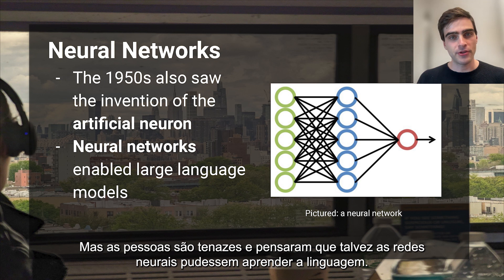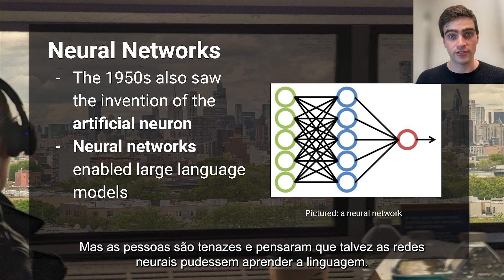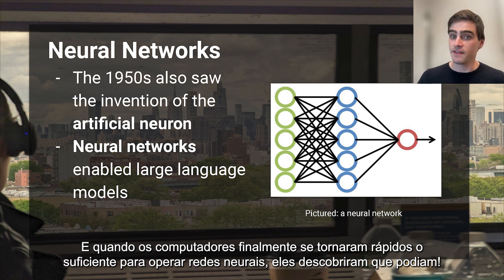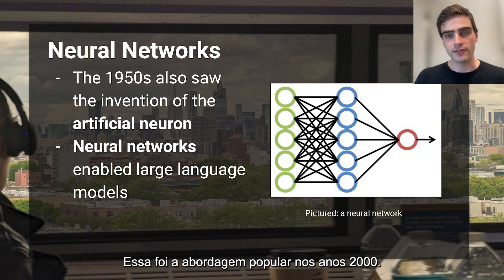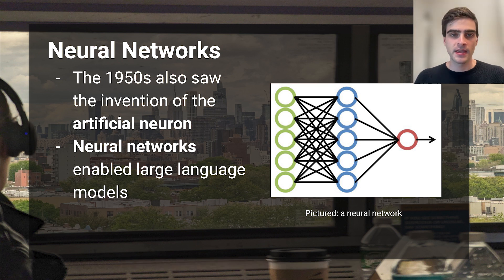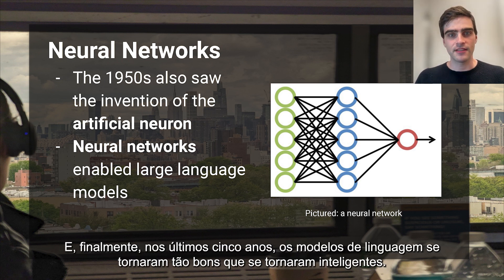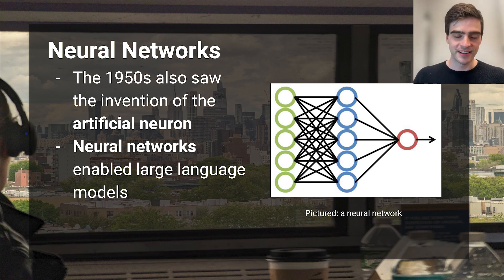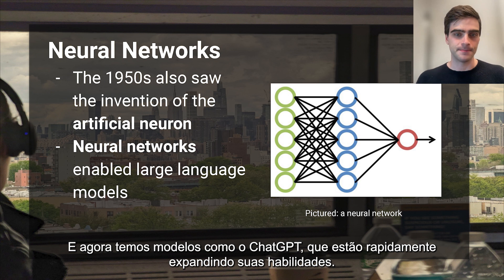But people are tenacious. They thought maybe neural networks could learn language. And when computers finally became fast enough to run neural networks, they found they could. This was a popular approach in the 2000s. AI research restarted. And finally, in the last five years, language models have become so good they've become intelligent. And now we have models like ChatGPT.